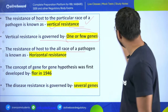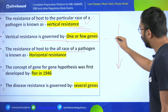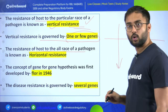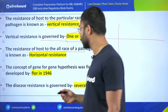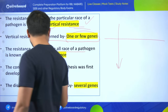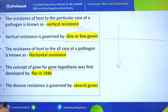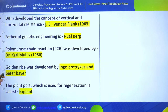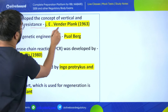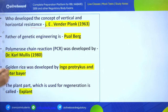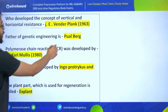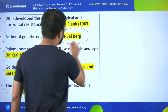If resistance is to a particular race, it is vertical resistance. If resistance is to all races, it is horizontal resistance. The concept of gene-for-gene hypothesis was first developed by Flor in 1946. Disease resistance governed by several genes - the concept of vertical and horizontal resistance was developed by Vanderplank. Remember the name Vanderplank.